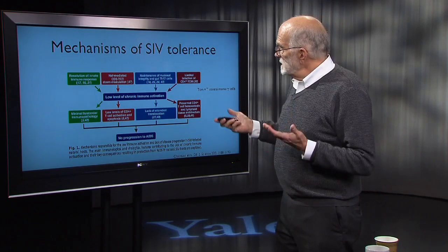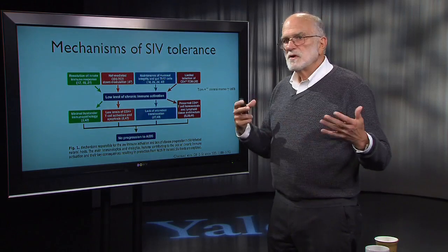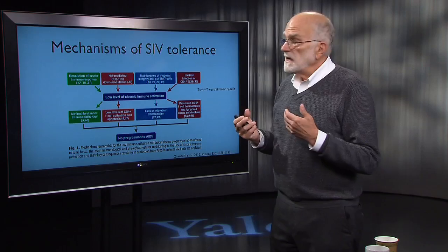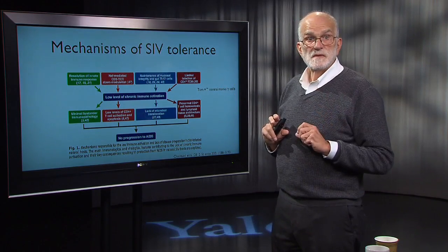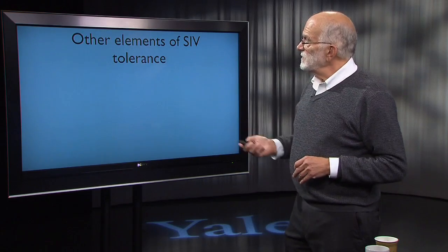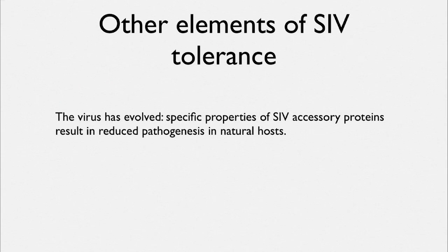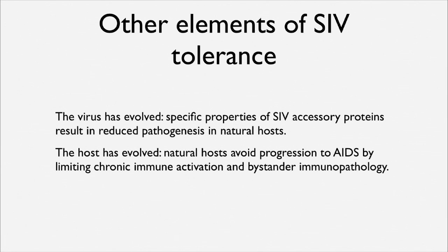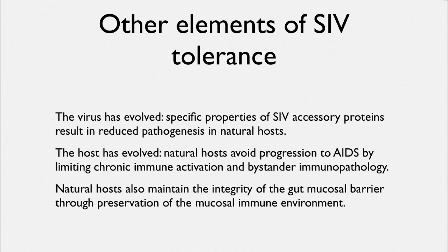This is a sign of long-term co-evolution between the virus and the host. The host has tweaked its immune system in a way that allows it not to get sick. The SIV virus has specific accessory proteins that reduce its impact on the host. The host avoids progression to AIDS by limiting immune activation and down-regulating the immune response in ways that reduce damage. They also maintain the integrity of their gut mucosal barrier by preserving the mucosal immune environment—something that gets eroded in AIDS.